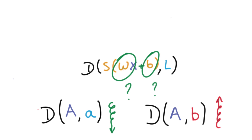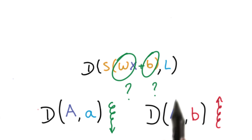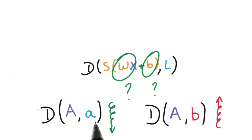Now we have all the pieces of our puzzle. The question, of course, is how are we going to find those weights w and those biases b that will get our classifier to do what we want it to do? That is, have a low distance for the correct class, but have a high distance for the incorrect class.